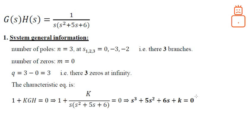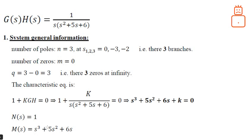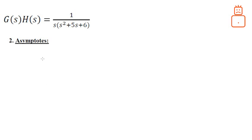Introducing the transfer function and rearranging gives us the characteristic equation. The last piece of information we need is the numerator and denominator of the forward transfer function. The numerator is 1, and the denominator is s³ + 5s² + 6s. We also need the derivatives of the numerator and denominator with respect to s.